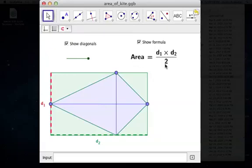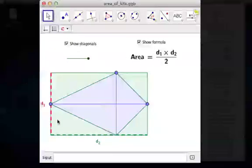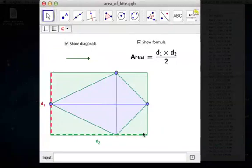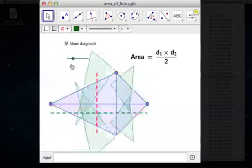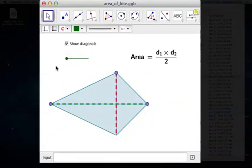And why do we have to divide by 2? Because we don't want the whole rectangle, that's d1 times d2, we want just half of that, which is the kite. And so that's the formula for the area of a kite, d1 times d2 divided by 2.